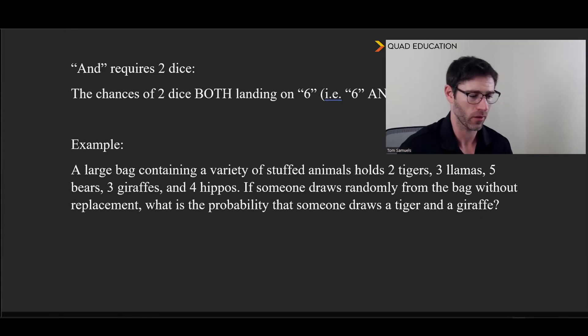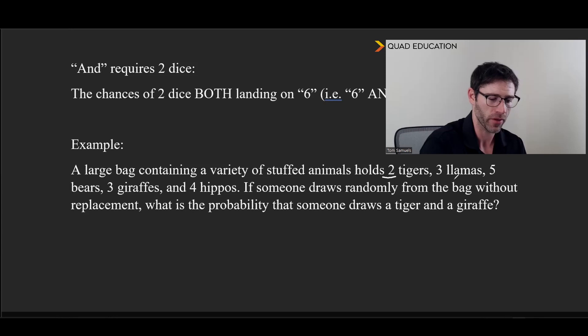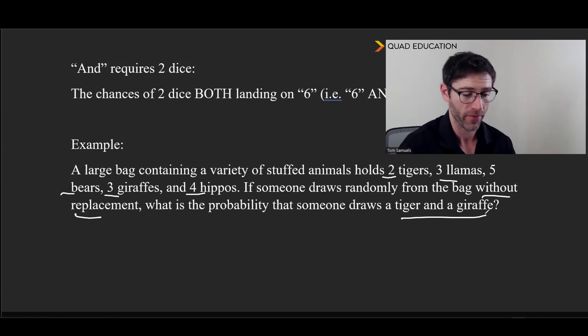So now let's take a look at a quick example here that I'll walk us through. We have a large bag containing a variety of stuffed animals: two tigers, three llamas, five bears, three giraffes, and four hippos. If someone draws randomly from the bag without replacement - really important term there - what is the probability that someone draws a tiger and a giraffe? So we see this 'and' word, so we know that it's multiplication, but we have something else going on, which is this 'without replacement'. That's to say when we pull one animal out of the bag, after that our number of animals in the bag will be different, it will be one less.